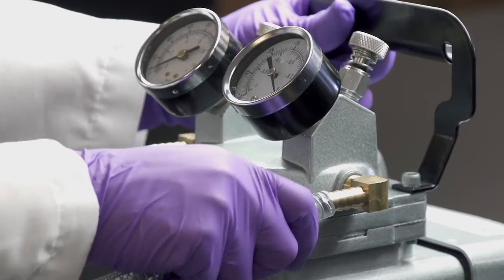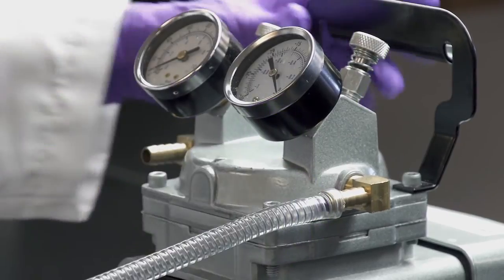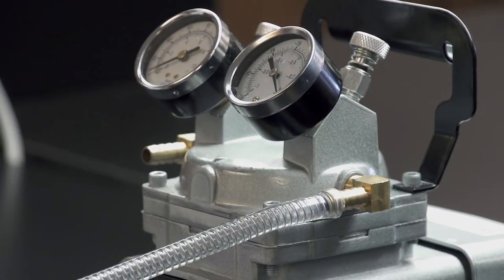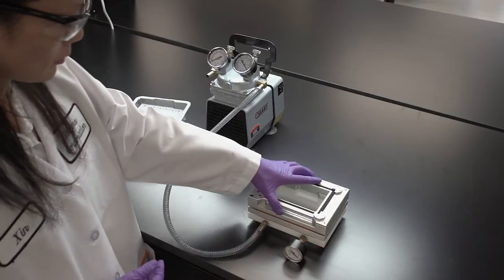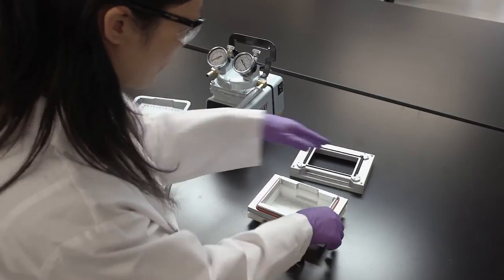connect the hose from the regulated vacuum source to the 96-well plate vacuum manifold and it is now ready to use. In this demonstration, we will be using an external vacuum pump, but you can also use a house vacuum.